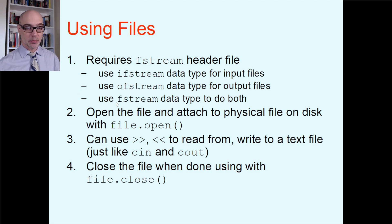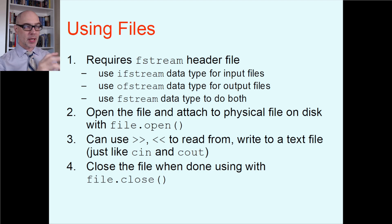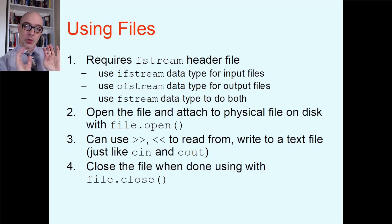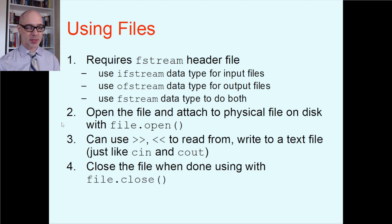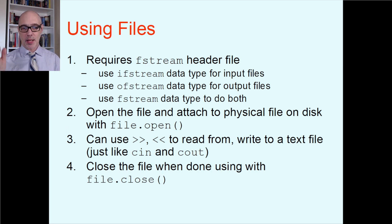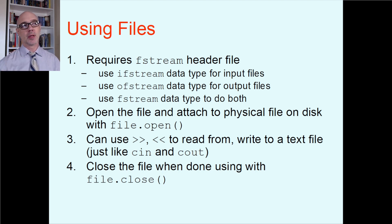Item number two: you have to open the file and attach it to the physical file on the disk. The function is called open. Every file object has a function inside it called open, so you write: file-object-name dot open, and inside the parentheses put the file name — like mydata.txt or lastWednesdaysImage.jpg. Item number three: once the file is open, for text files you can use the right-arrow extraction operator or the left-arrow insertion operator to read from or write to the file, just like you do with cin and cout.